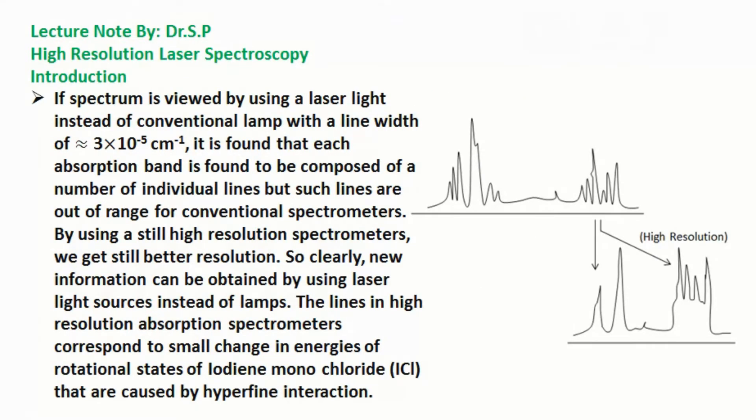If spectrum is viewed by using a laser light instead of conventional lamp with a line width of 3×10^-5 per cm, it is found that each absorption band is composed of a number of individual lines, but such lines are out of range for conventional spectrometers.